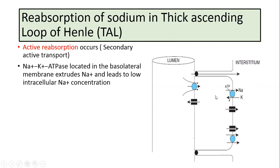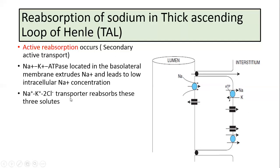Due to the low intracellular sodium concentration, a chemical gradient is created, which favors the movement of sodium from the lumen into the cell. The movement of sodium across the apical membrane is mediated by the sodium potassium 2 chloride transporter, which reabsorbs the three solutes: